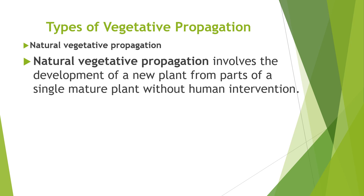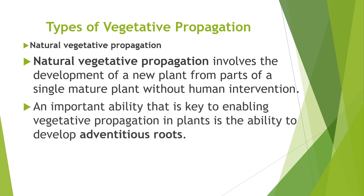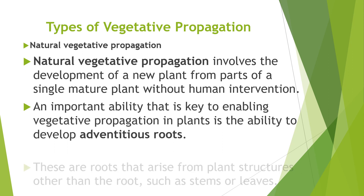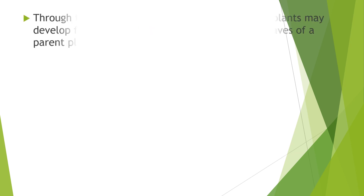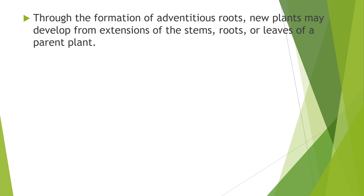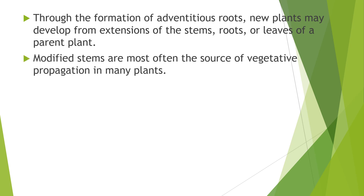Natural vegetative propagation involves the development of a new plant from parts of a single mature plant without human intervention. An important ability key to enabling vegetative propagation in plants is the ability to develop adventitious roots — roots that arise from plant structures other than the root, such as stems or leaves. Through the formation of adventitious roots, new plants may develop from extensions of the stems, roots, or leaves of a parent plant. Modified stems are most often the source of vegetative propagation in many plants.